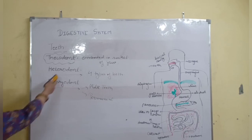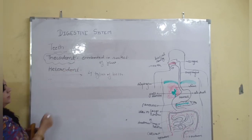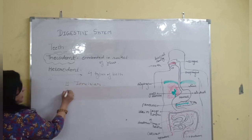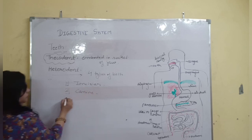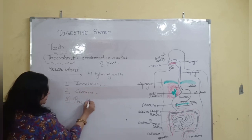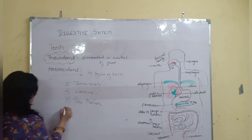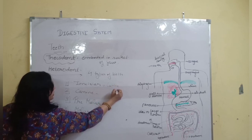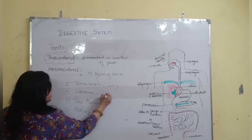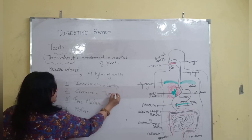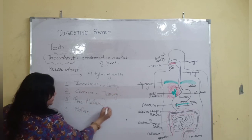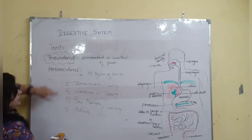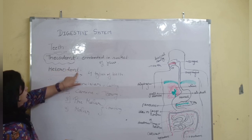So regarding heterodont, we have four types of teeth: incisors, canines, premolars, and molars. Incisors help in cutting of food. Canines help in tearing of food. Molars and premolars help in crushing of food. Having four different types of teeth is the condition known as heterodont.